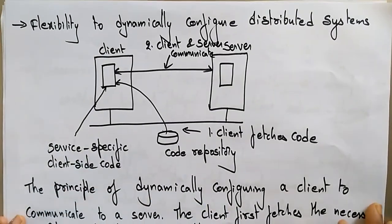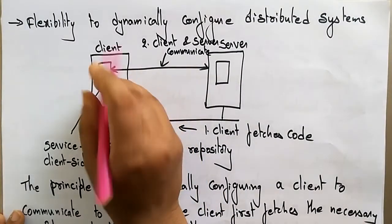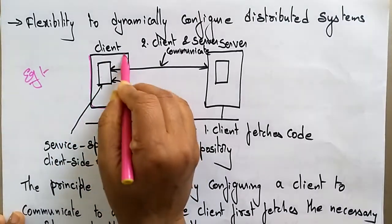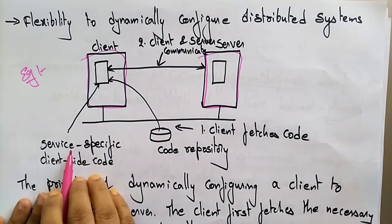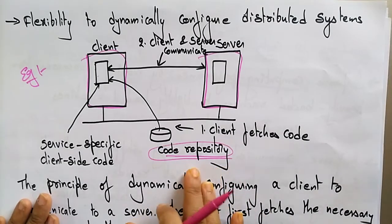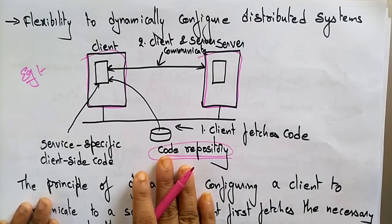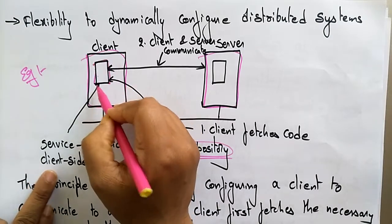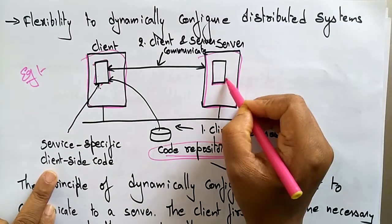The flexibility to dynamically configure a distributed system — let's take an example. Here we have a client machine and a server machine. There is also a code repository. I want to move code from the client to the server — this is code migration. Service-specific client-side code is stored on the client side, and service-specific server-side code is stored on the server side.